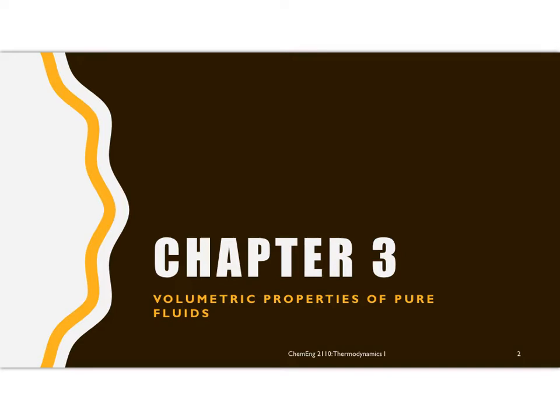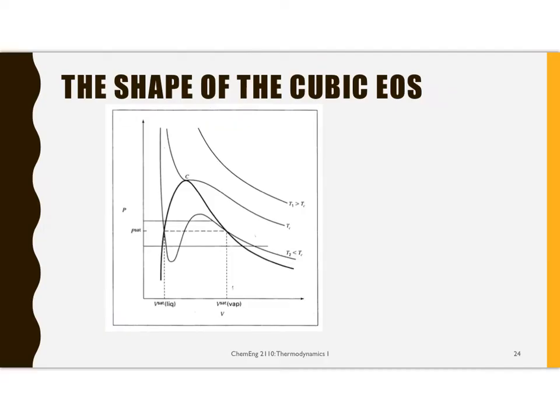We had been looking at the virial equation of state in class, and next we're starting to look at cubic equations of state. One of the things we looked at was that if you plot P versus V for various temperatures, you end up with these three curves shown here. And we either get one root, or three roots, or repeated roots.